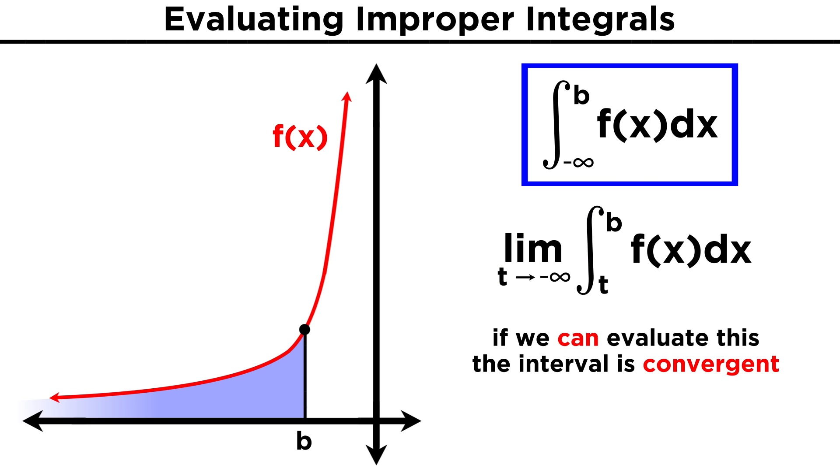If we are evaluating an improper integral and we do get a finite number as an answer, then we say that the interval is convergent. If the limit does not exist, meaning the area truly is infinite, we say that the interval is divergent.